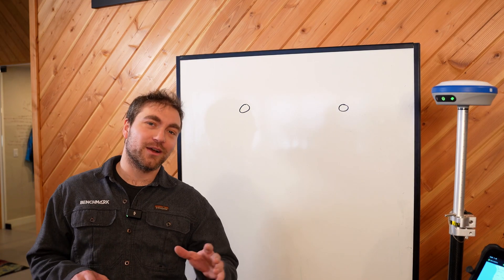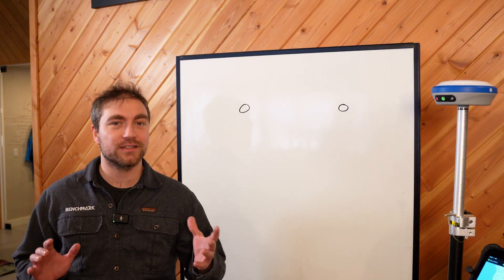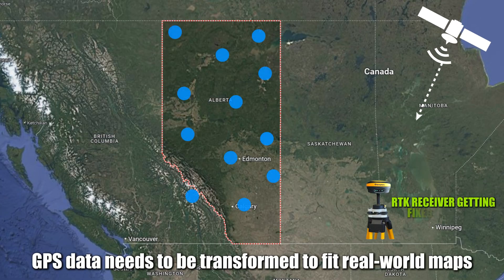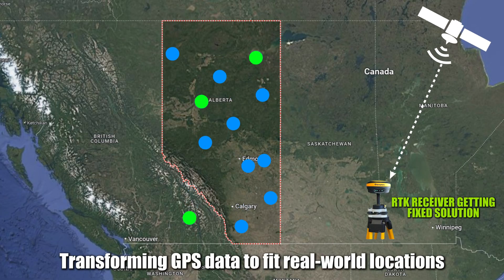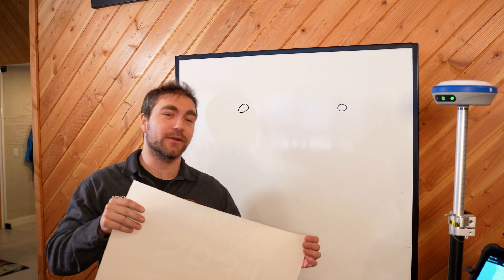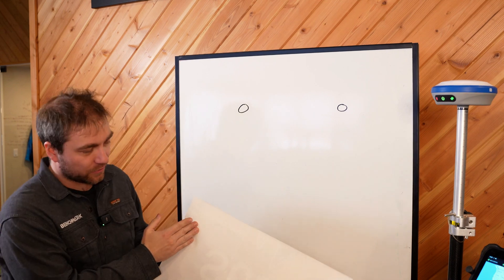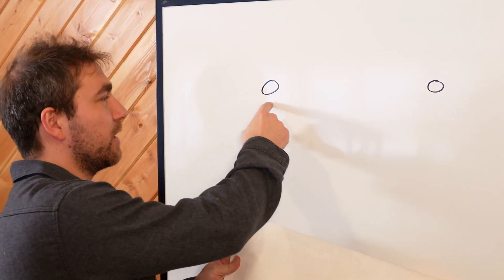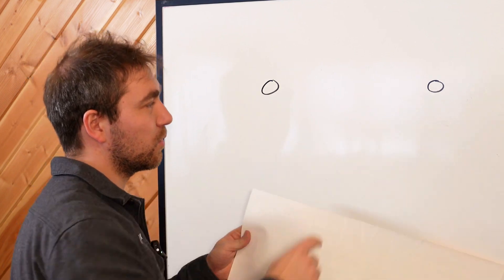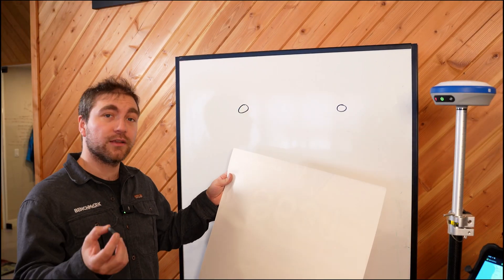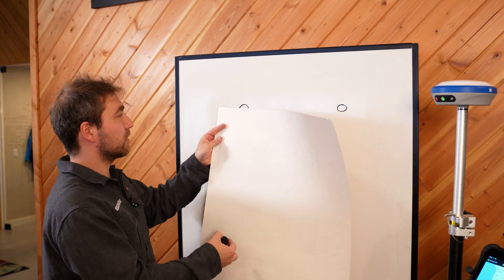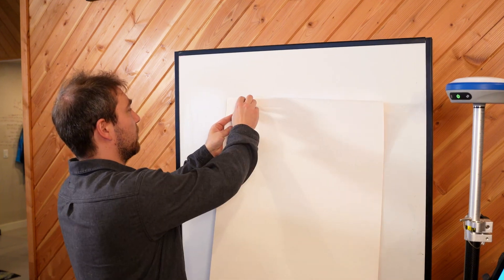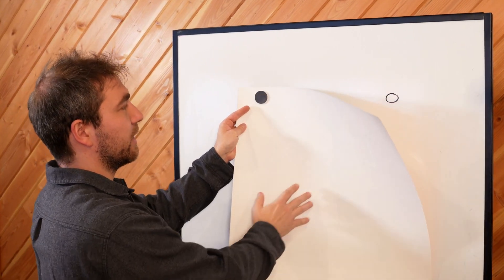From 7,000 miles up, a localization is basically just taking your GPS data and transforming it to match your real world data that already exists. If we take this sheet of paper — this is what the GPS sees, this is the GPS world — and these are my two known coordinates. What you're going to do is take your rover with the RTK fix and go to one of them and shoot the point.